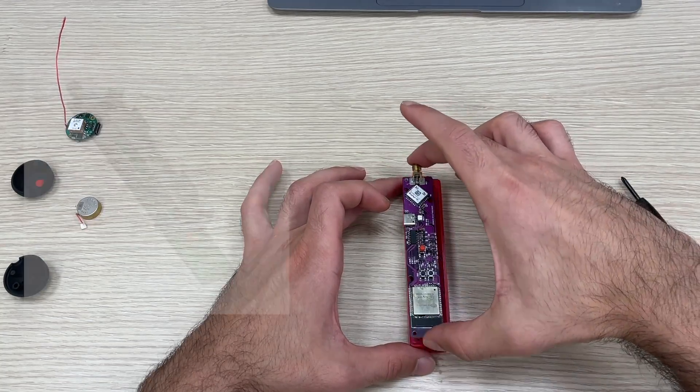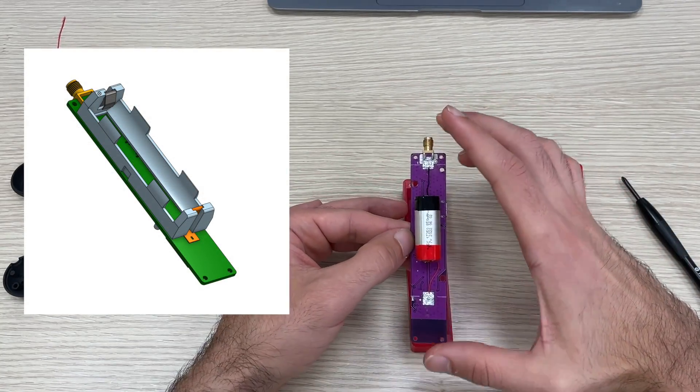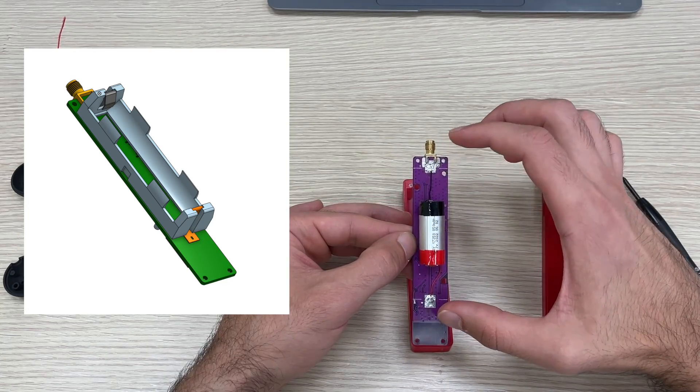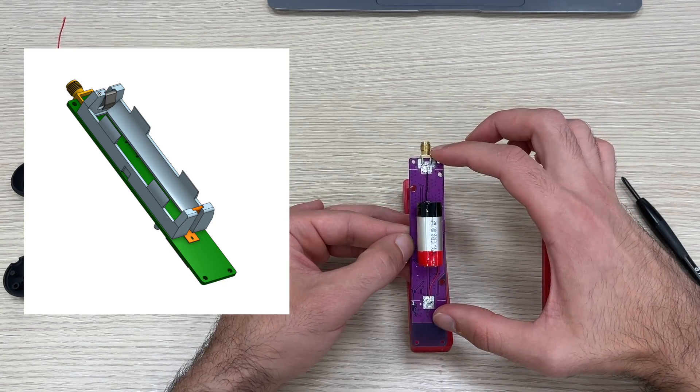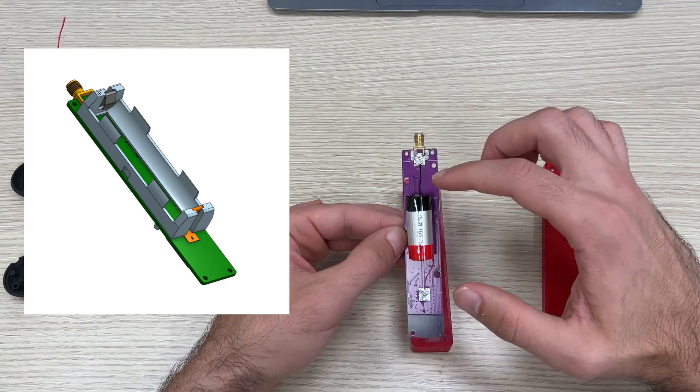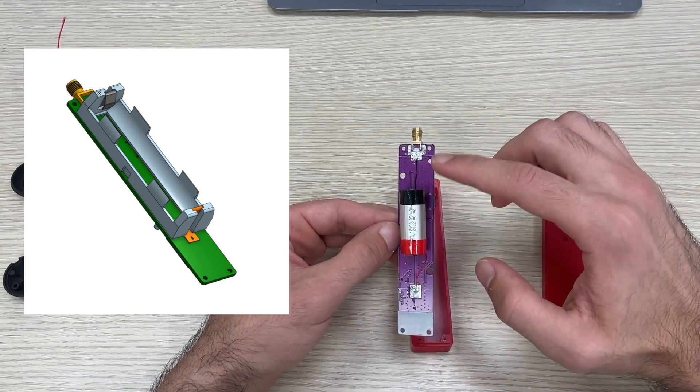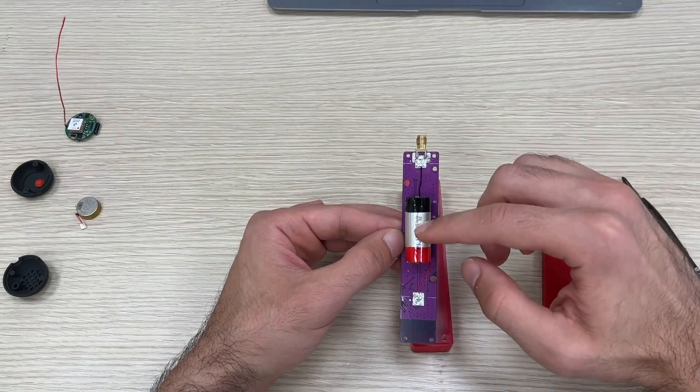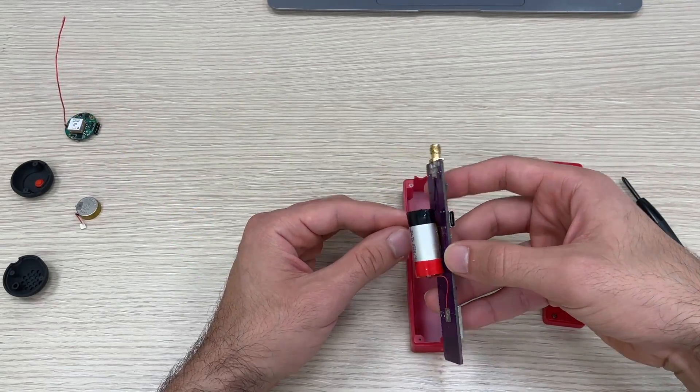On the back we have a battery. Here's supposed to be a battery holder for lithium ion 18650. In this version I don't have it currently, I used this battery on the prototype version.